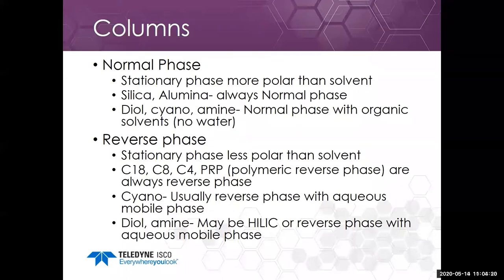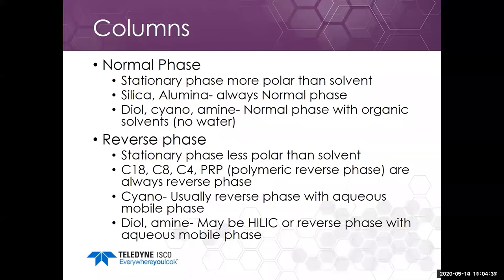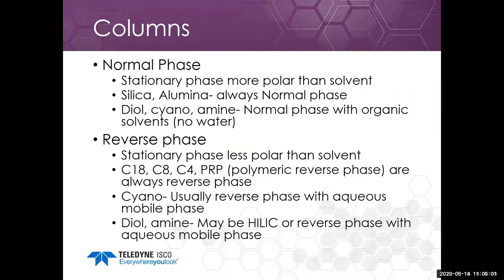Reverse phase came about a little bit later than normal phase, so it's called reverse phase because it's reversed — the stationary phase is less polar than the solvent. Stationary phase columns include C18, C8, C4, and polymeric reverse phase. Cyano is usually reverse phase with an aqueous mobile phase, though there are a handful of exceptions. Diol and amine might be reverse phase or normal phase when running water. We have application notes on our website about when those columns run in each mode.